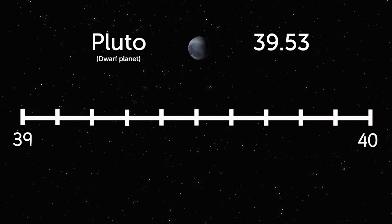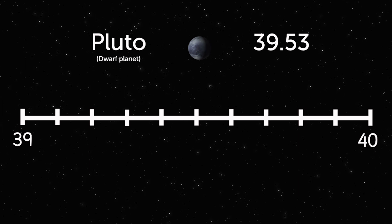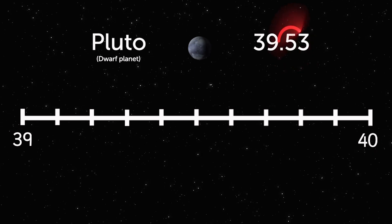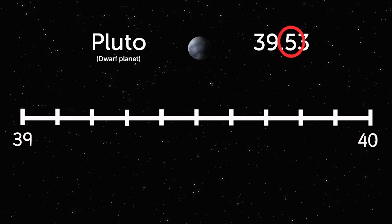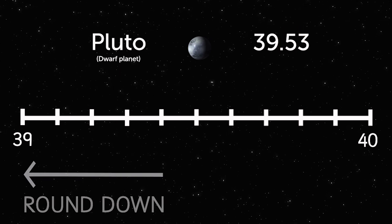This is between 39 and 40 AUs, so you need to look at the digit in the tenths place to work out if you need to round it down or up.